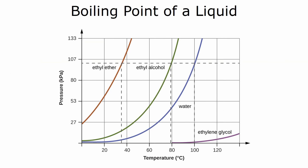Now, let's talk a bit about the boiling point of a liquid. Here we have a chart of diethyl ether, ethyl alcohol, water, and ethylene glycol. Now, as we increase the temperature, the vapor pressure of all these liquids goes up.